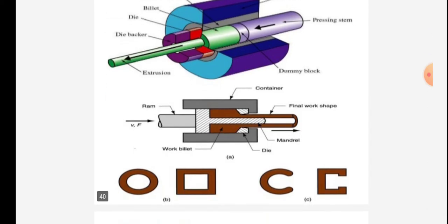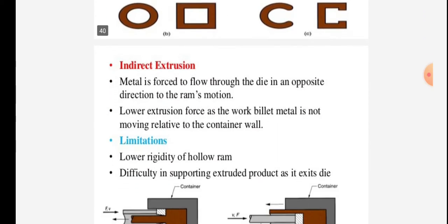In the next figure, the container is given, RAM is given with velocity V and force F, the final work piece is shaped, mandrel is given, and die is given. This shows indirect extrusion.